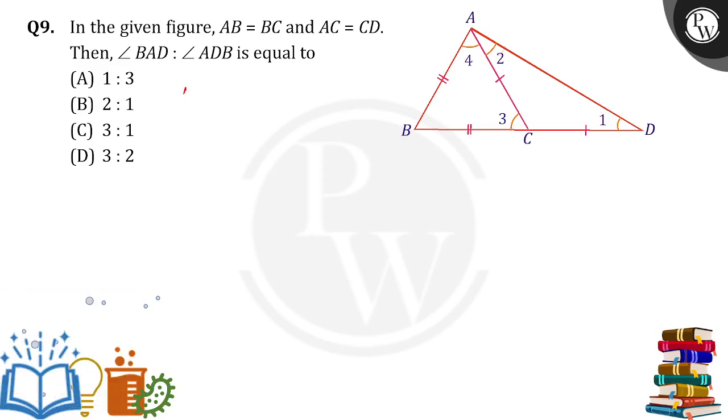In triangle ACD, the outer triangle I have taken, it was given that AC is equal to CD. When these two are equal, then opposite angles are equal, which means angle 1 is equal to angle 2. So I take them as X. Angle 1 is X, angle 2 is also X.